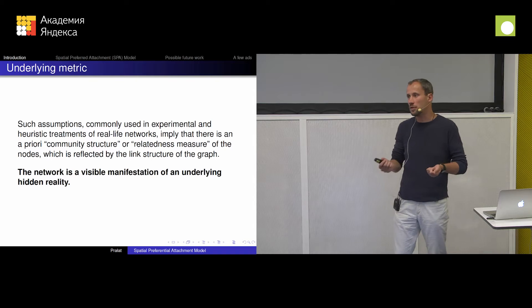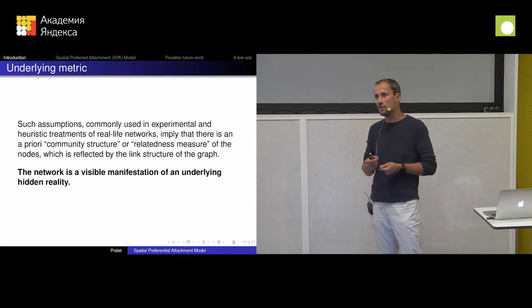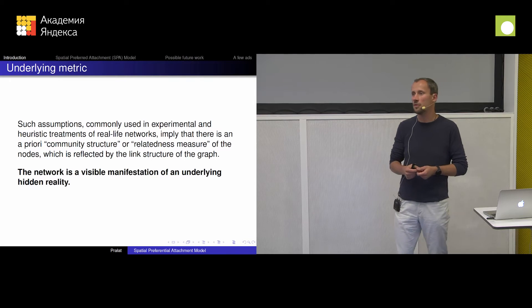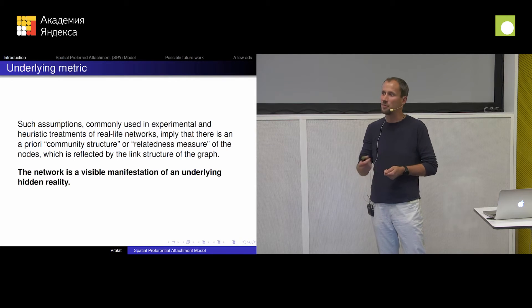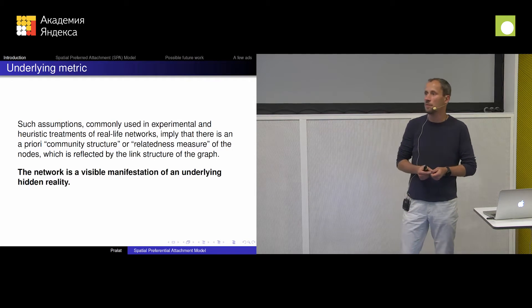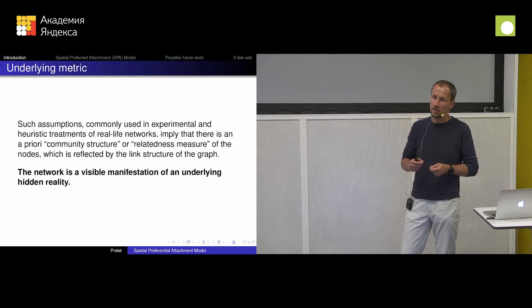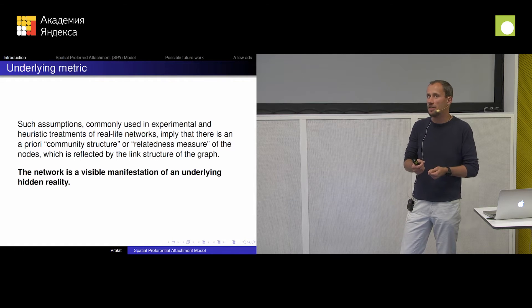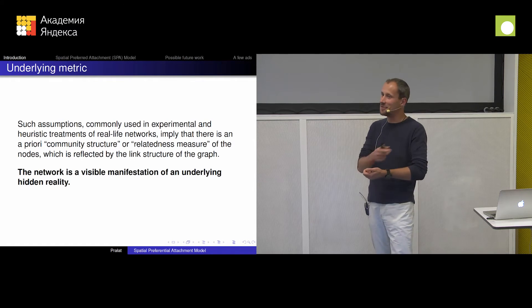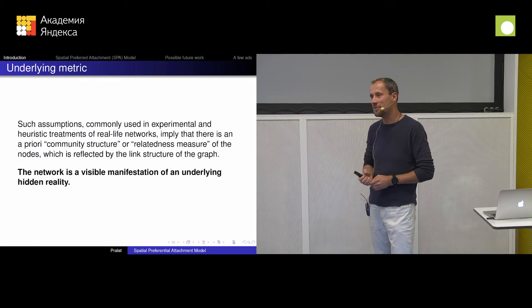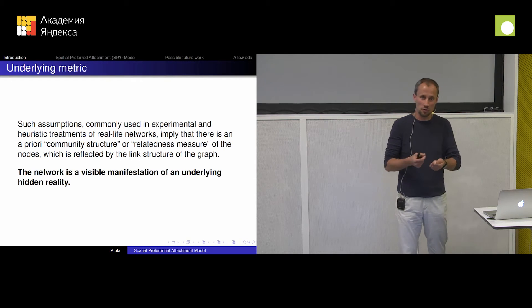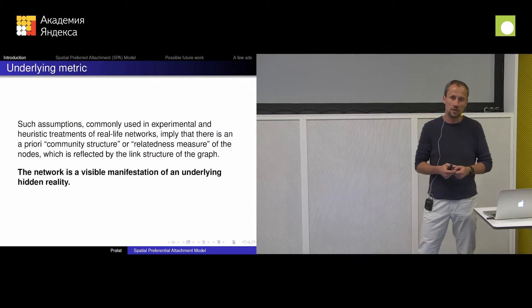And what does similarity mean? Well, it could mean a lot of different things. Maybe they have similar interests or maybe they live close by. Maybe they have completely different interests, but I see them every day when I'm buying bread. Or maybe they have a similar hairstyle. There are many aspects why these people are close to each other. But in some sense, there is some underlying space that we live in, and the reason we connect to each other is that we are very often close to each other in that space.